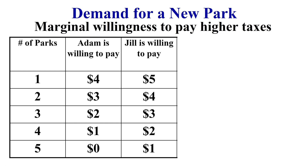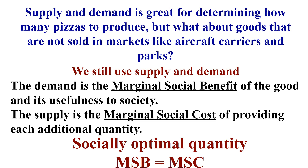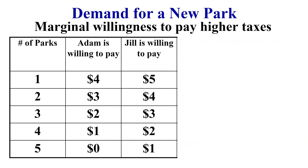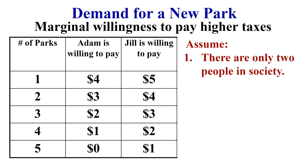Consider a new park example with two citizens in this town: Adam and Jill. Their willingness to pay is shown on screen. Adam is willing to pay up to $4 for a park; Jill is willing to pay up to $5. But as you add additional parks, their willingness to pay declines, leading to a downward sloping demand curve. The marginal social benefit is our demand curve, and as you add more parks, they're less willing to pay for a fourth, fifth, or sixth park.